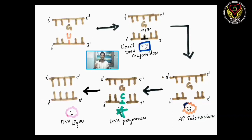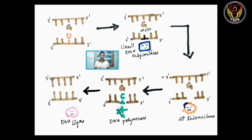First of all, there is a strand and a complementary strand. In G, the complementary C and the cytosine will convert. So the deamination will be fixed. Then G and U is fixed. First recognition — the uracil DNA glycosylase is the enzyme. It recognizes G and U as the first step. The uracil is the main point.